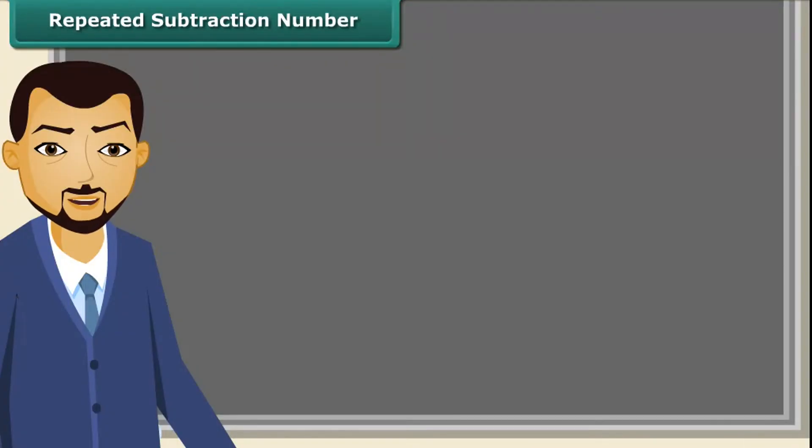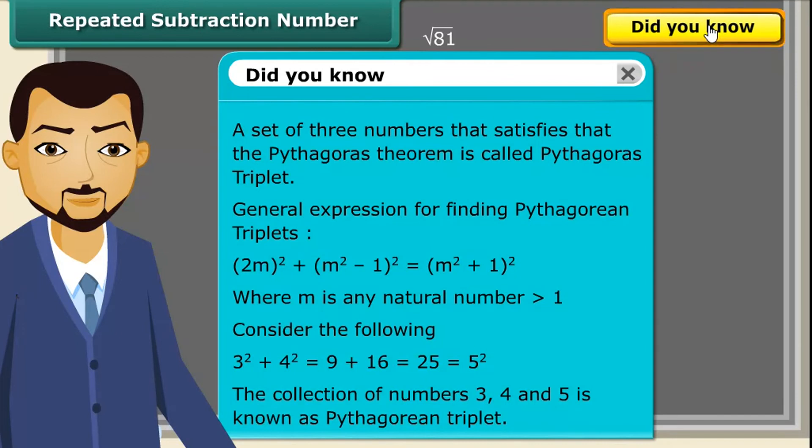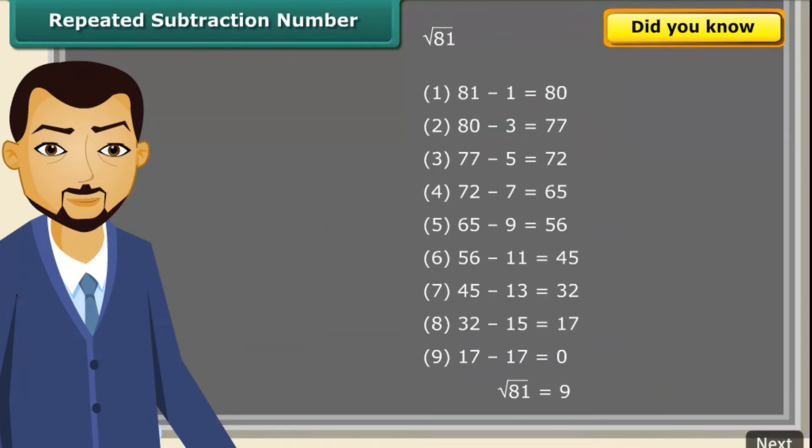We can find the square root of a given number using repeated subtraction method. It is really easy. Consider the square root of 81. Just subtract successive odd numbers from 81 starting from 1 till the difference becomes 0. You have noticed it took 9 steps to get the difference as 0. Therefore, the square root of 81 is 9.